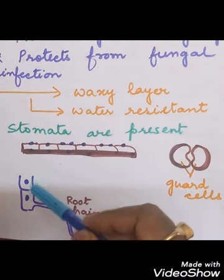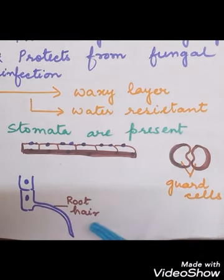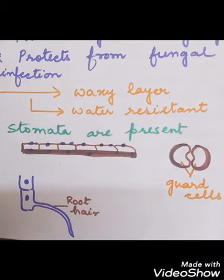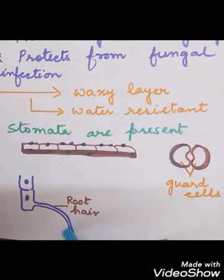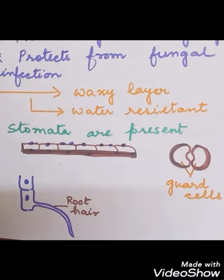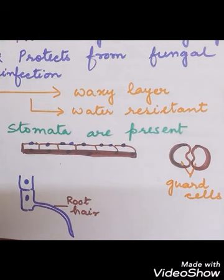In roots, some epidermal cells extend outward to form root hairs, which increase the surface area for water absorption. So the most important functions of epidermal cells are protection, prevention of water loss, and in roots, increasing the surface area for absorption of water.